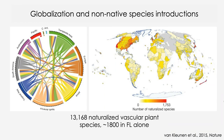In addition to accidental introductions due to global travel and trade, there's also the intentional movement of species for horticulture and agriculture. We now have more than 13,000 naturalized vascular plant species around the world. A 2015 paper in Nature by van Kleunen and others showed the routes of introduction and hotspots of where these species are concentrated. We have more than 1,800 in Florida alone, and only a subset of these non-native species are invasive.